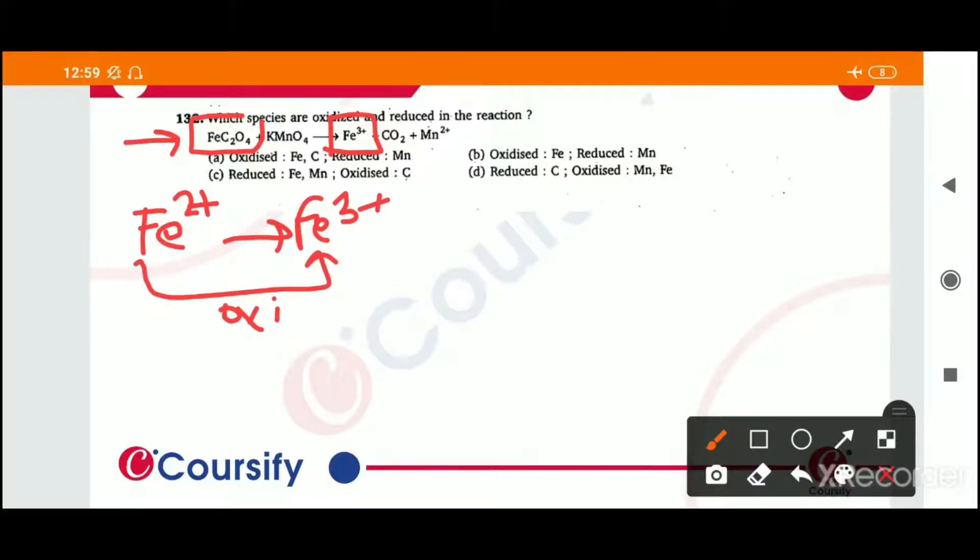In this way, if we look at the oxidation number of manganese, what is Mn? Mn oxidation number is plus 7. And on the right side, what is Mn? 2+. So this means Mn reduced.